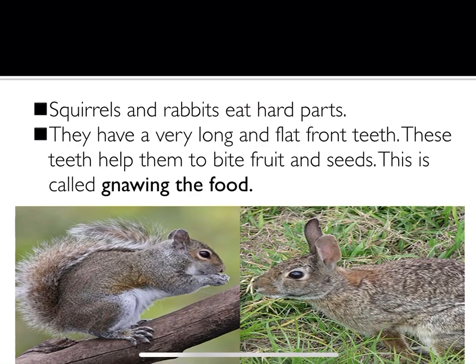Squirrels and rabbits eat plant parts that are hard. They have a set of very long and flat front teeth that help them to bite fruit and seeds. This is called gnawing the food. To gnaw means to bite something repeatedly or chew it hard.